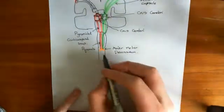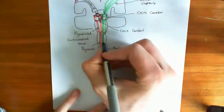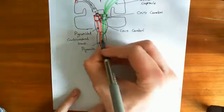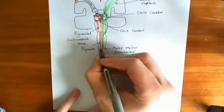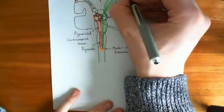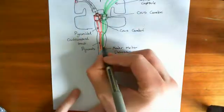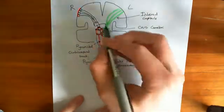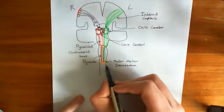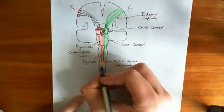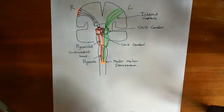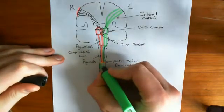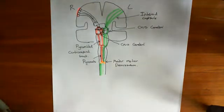At the bottom of the medulla, the fibres from each side of the corticospinal tract cross over — most of them anyway. So 90% of these green fibres are going to cross onto the opposite side. This is the left side and this is the right side. So 90% of the green fibres cross from left to right, and 90% of the pink fibres cross from right to left, leaving just 10% on the same side. So most of the green ones are now on this side, and a tiny portion remain on the left side.